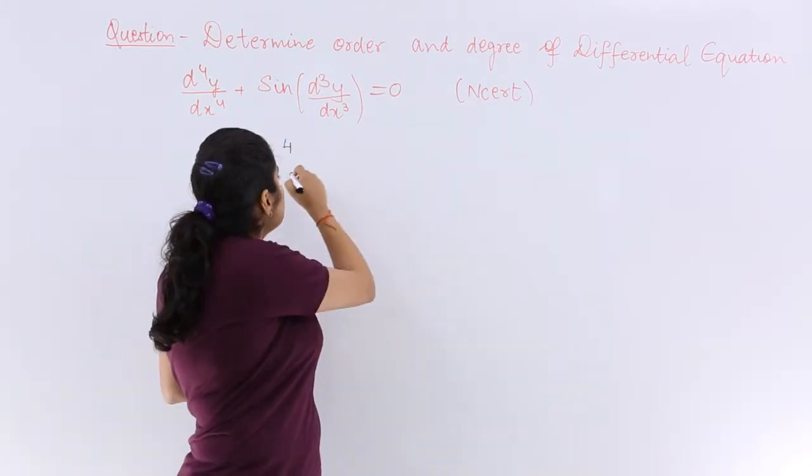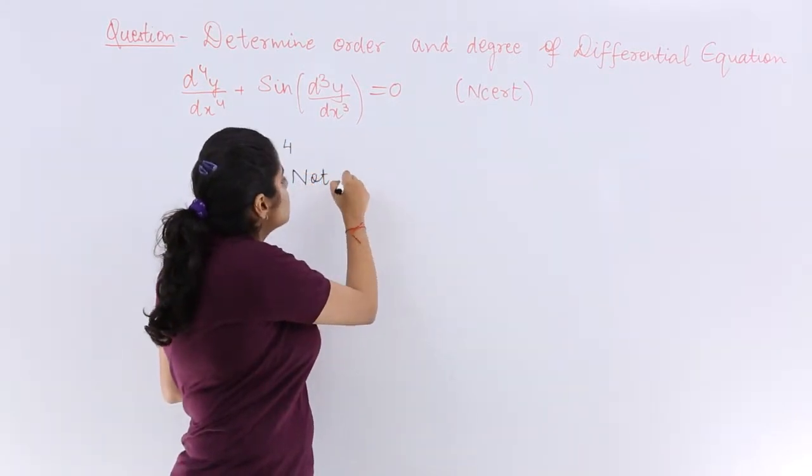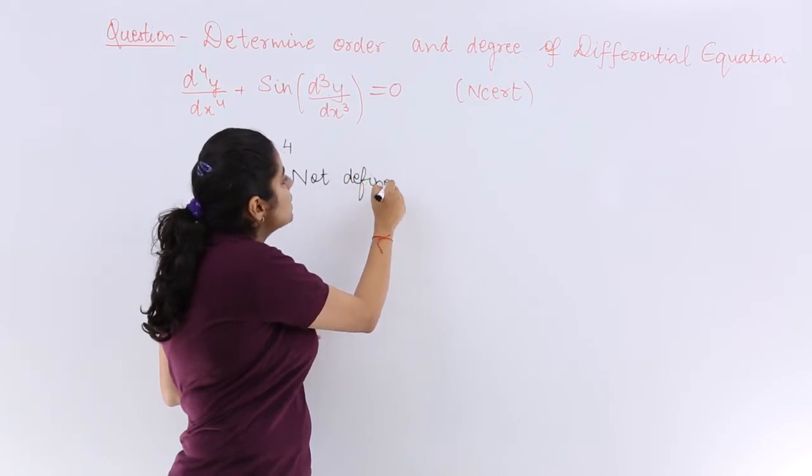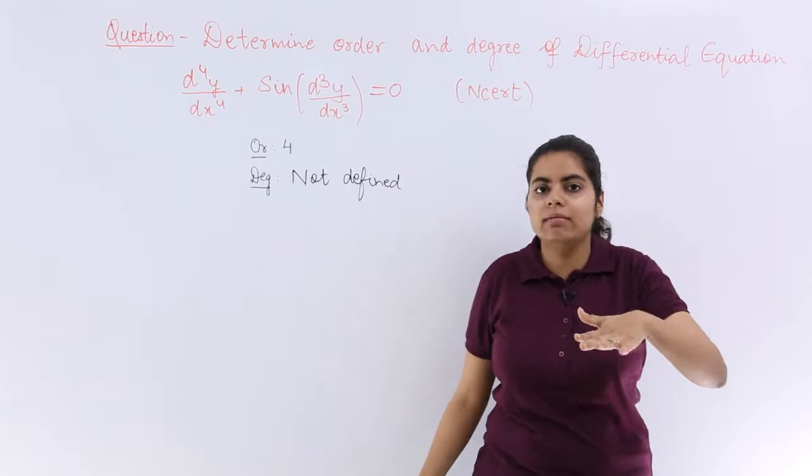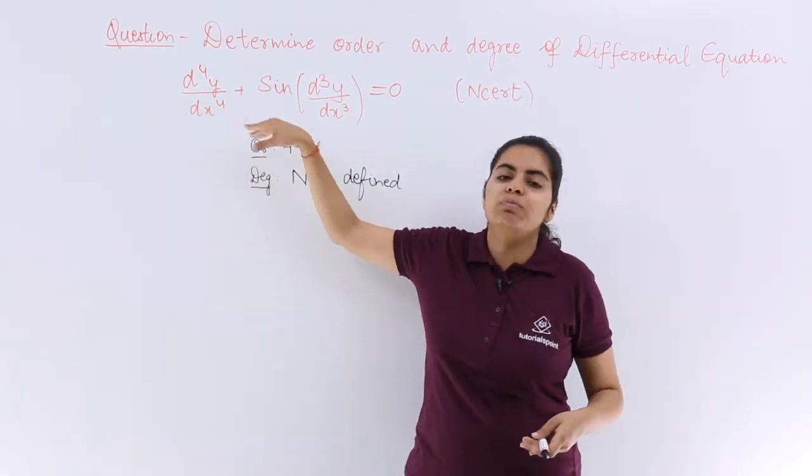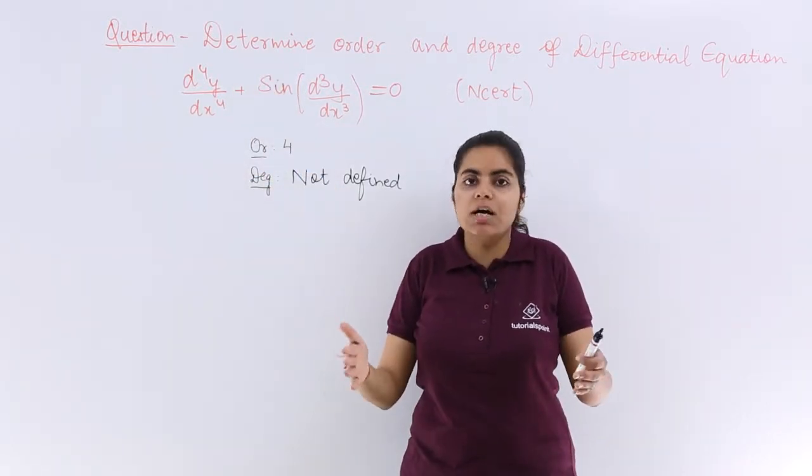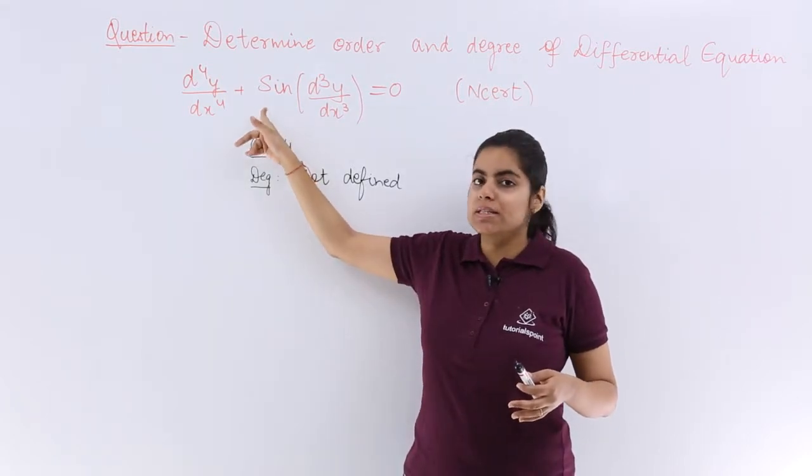So the degree is not defined. So you have to very well understand the definitions. You cannot understand half of the definition that okay, the highest order derivative is 4, its power is 1, so the degree is 1. No. Because there is sine which is disturbing us.